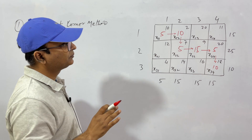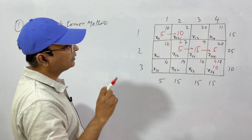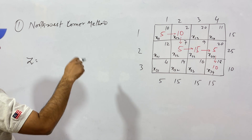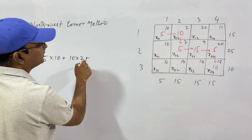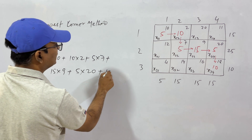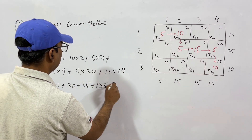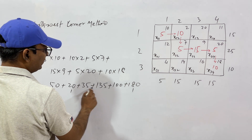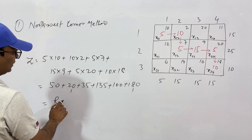This is the simplest method, but it does not give the minimum cost — it gives just a starting solution. The transportation cost is: 5×10 + 10×2 + 5×7 + 15×9 + 5×20 + 10×18 = 50 + 20 + 35 + 135 + 100 + 180 = rupees 520.